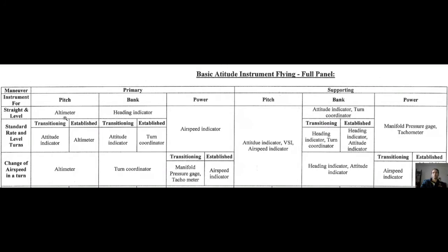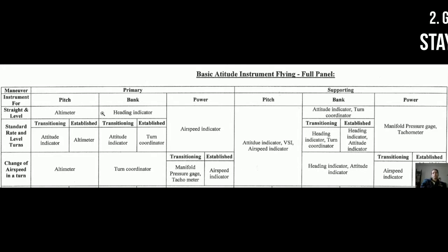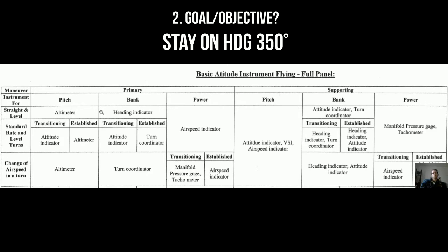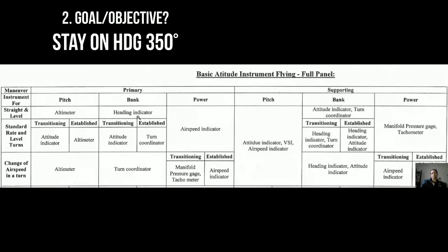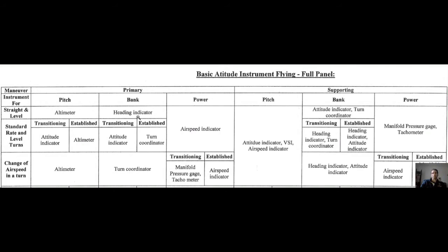So the altimeter will be our primary instrument for pitch, our first instrument. What about direction? Well, we're supposed to hold a heading of 350. The easiest way to find out whether we are banking left or right or losing that heading is by taking a look at the heading indicator. So our heading indicator is our primary or first instrument for heading changes, or changes in direction.